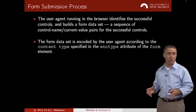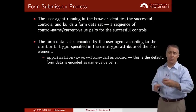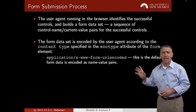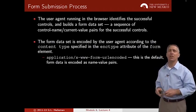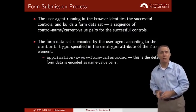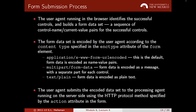The form data is encoded according to the content type. The available content types are: application/x-www-form-urlencoded, which is the default and used by both GET and POST; multipart/form-data; and text/plain, where the form data is sent as plain text without encoding.